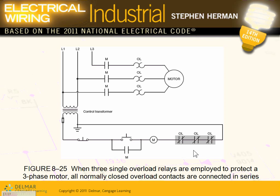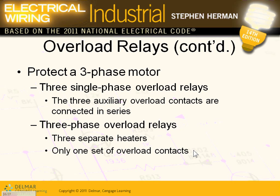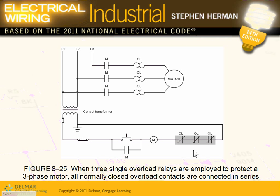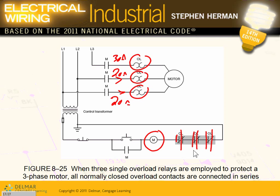Three-phase overload relay heaters: in this case you have three single overloads — one, two, three — each one in a phase. Each one can open the circuit. So if phase A is 20 amps, phase B is 20 amps, but phase C is 30 amps, something is wrong in phase C. That overload relay will open. Any one of the three can de-energize the circuit — if you open any one of them, the coil will be de-energized and the contacts will open.